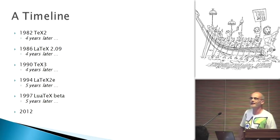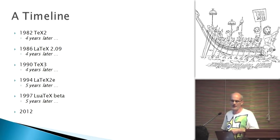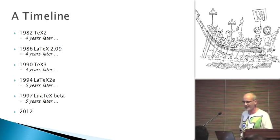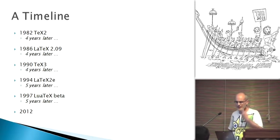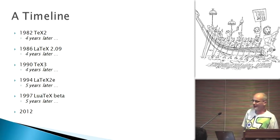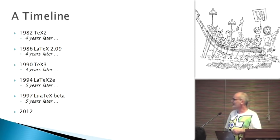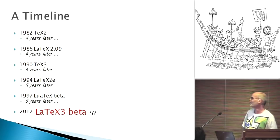A timeline: 1982 we had TeX 2 and four years later there was LaTeX 209. Another four years later in the 1990s there was TeX 3 and then four years later we had LaTeX 2E. Then there's a bigger gap and then we have Lua beta. So what is in 2012? Well, if that timeline is correct it should be this one, but I'm not going to talk about these predictions.